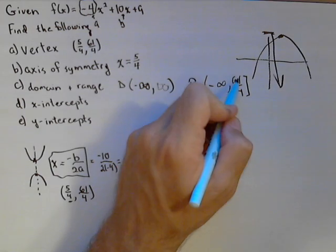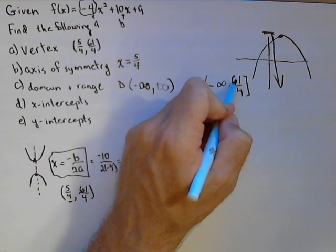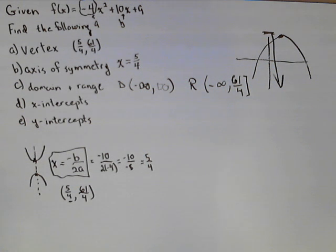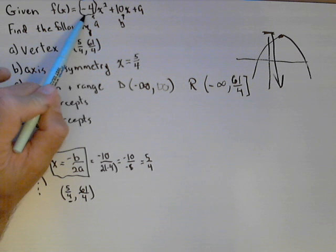So we can always find our range from the y coordinate of our vertex. It's either going to be from the y coordinate up or from negative infinity up to our y coordinate, depending on which way our parabola is opening. All you've got to do again is look at the a value.